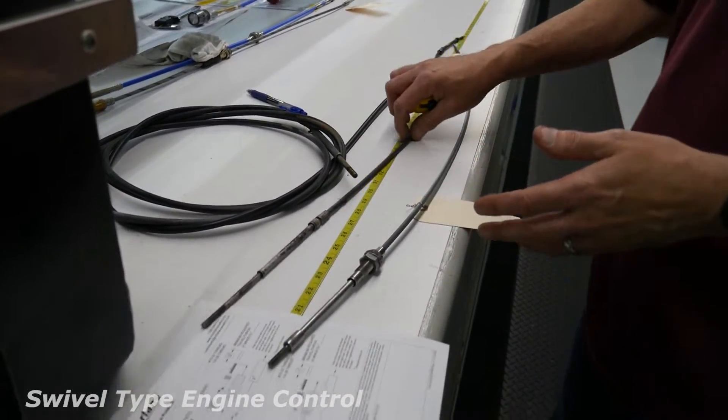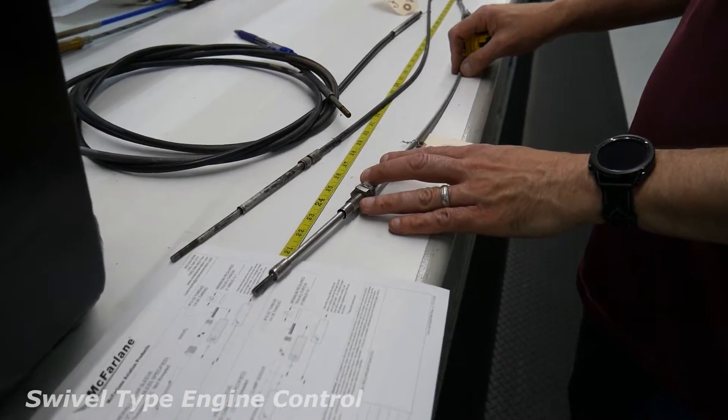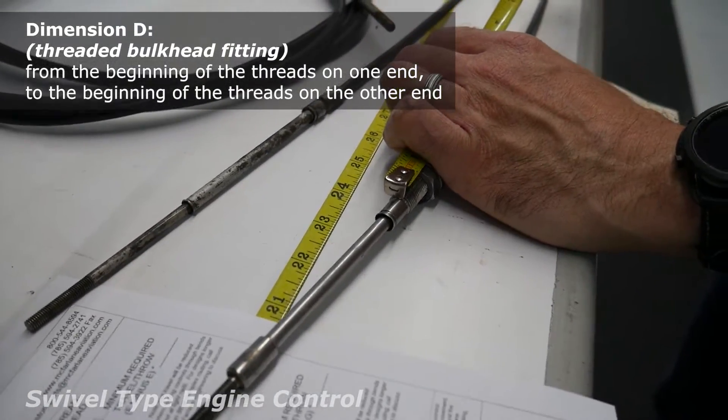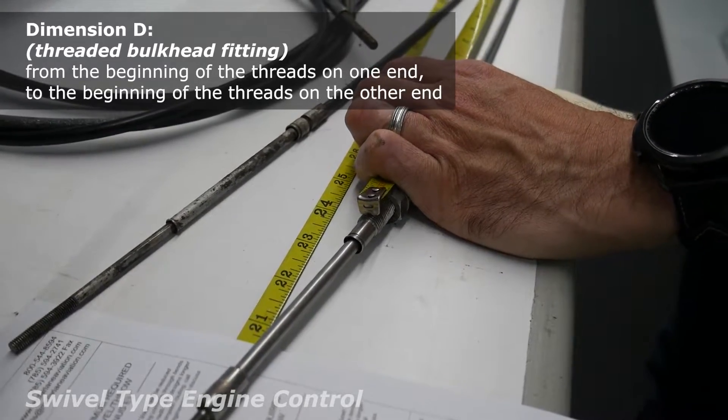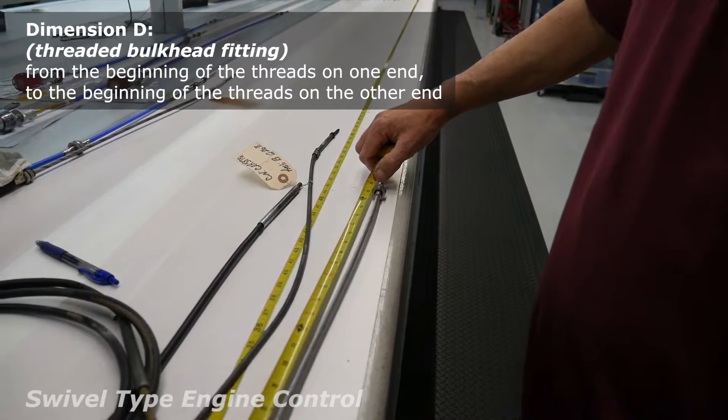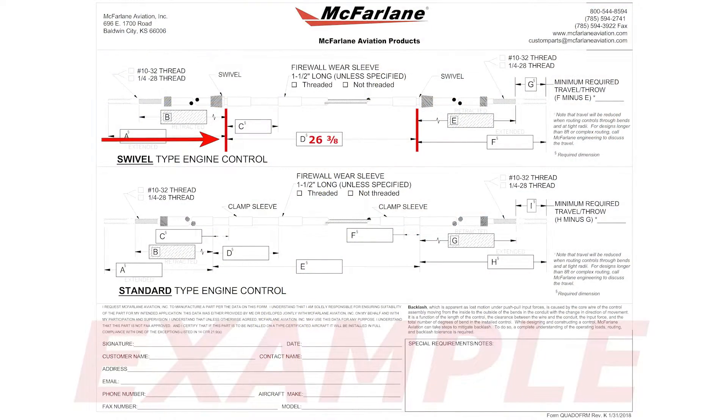And then if you have a part that has threads, rather than from the groove, we measure from the very beginning of the threads on that end, to the other end of the threads there, 26 and three-eighths on that.